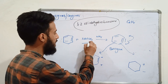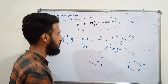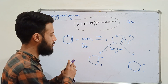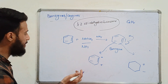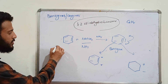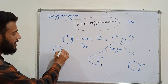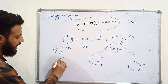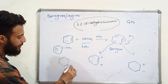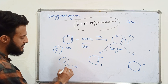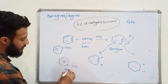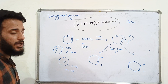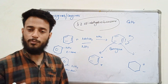Therefore, when an NH2 molecule reacts with benzyne, two types of products are formed — ortho-aniline and meta-aniline. Meta-aniline and ortho-aniline are both produced in this reaction.